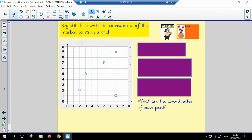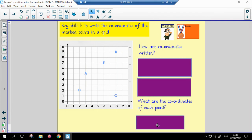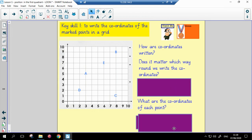So, let's look at our first activity and our first key skill. Key skill one is to write the coordinates of the marked points on a grid. So, our question here is, what are the coordinates of each point? First of all, we need to think about how coordinates are written. They always have an opening bracket, they're followed by the x-axis with a comma, followed by the y-axis, and then we close the brackets. Okay, so does it matter which way round we write the coordinates? Absolutely. We must remember to put the x-axis first. If not, we can get a completely different coordinate, and it will be incorrect.